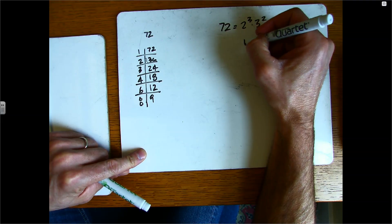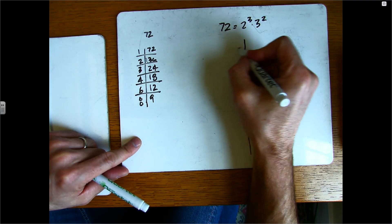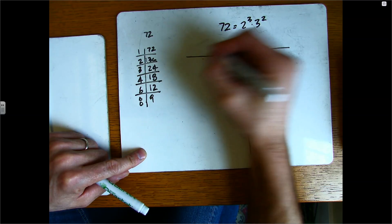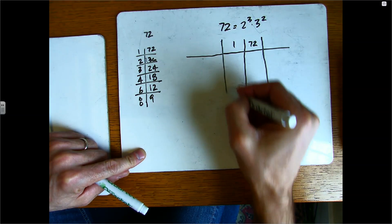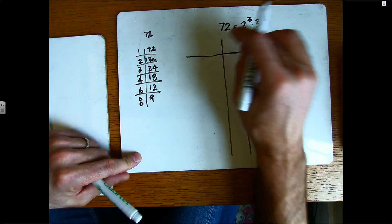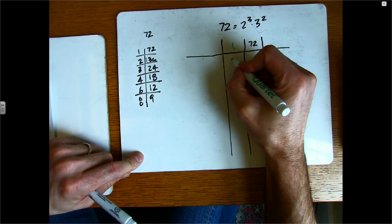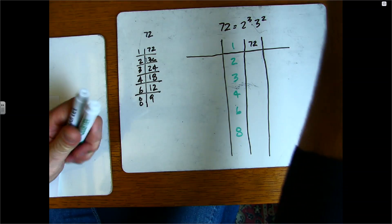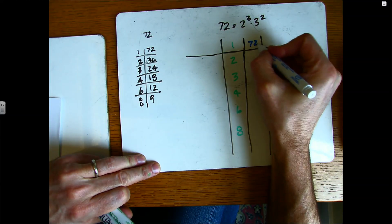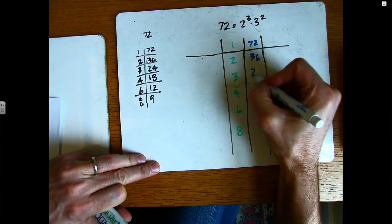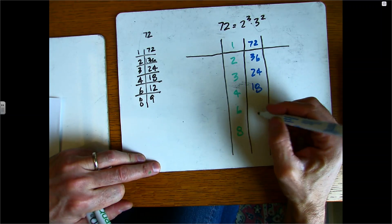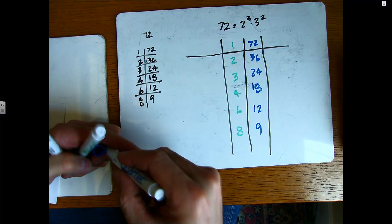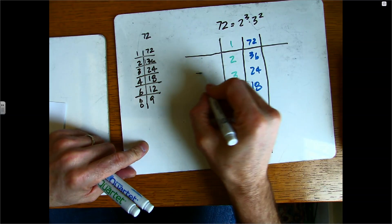I'm going to write them down again with a little bit more space and in different colors. So 1, 2, 3, 4, 6, and 8 on the left side, and on the right side in blue: 72, 36, 24, 18, 12, and 9. Then I'll find the prime factorization of each one of these numbers.